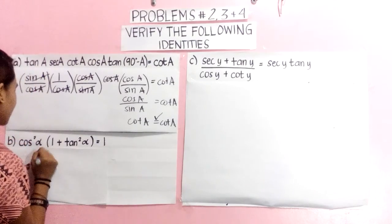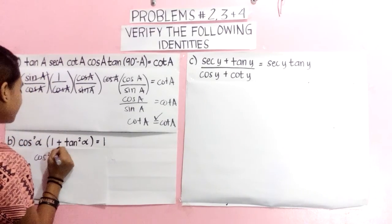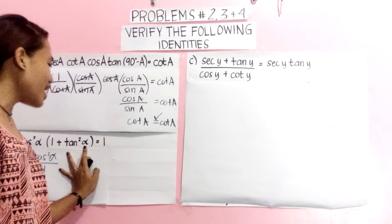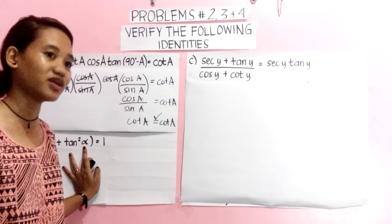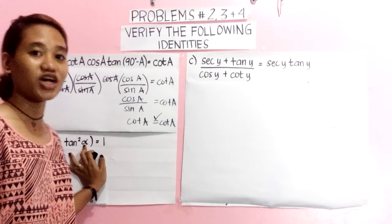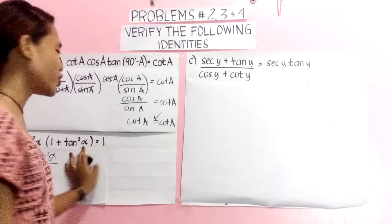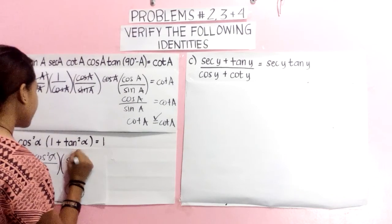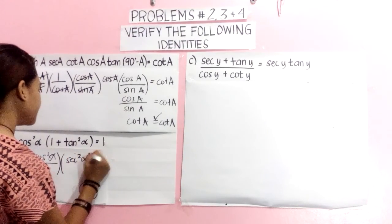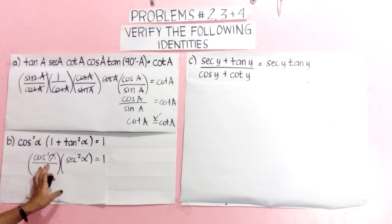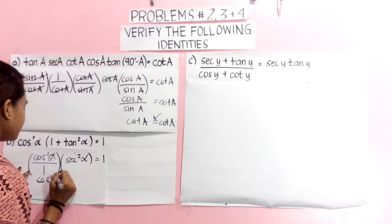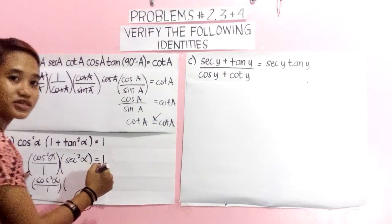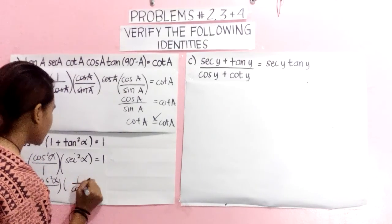Cos squared alpha remains cos squared alpha over 1. And 1 plus tan squared alpha is sec squared alpha according to the trigonometric relation through Pythagorean theorem. So cos squared alpha times sec squared alpha is equal to cos squared alpha times 1 over cos squared alpha.